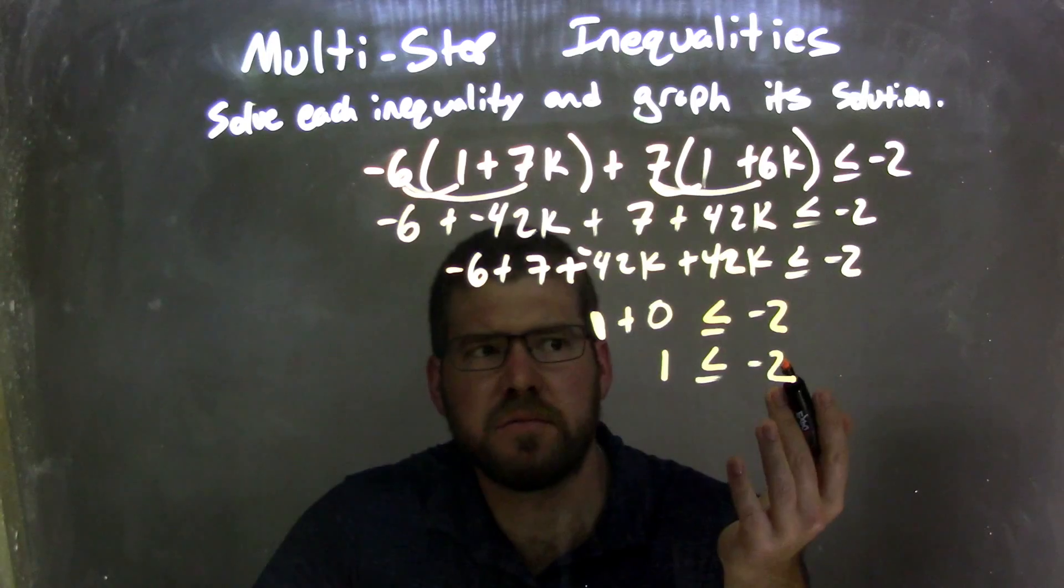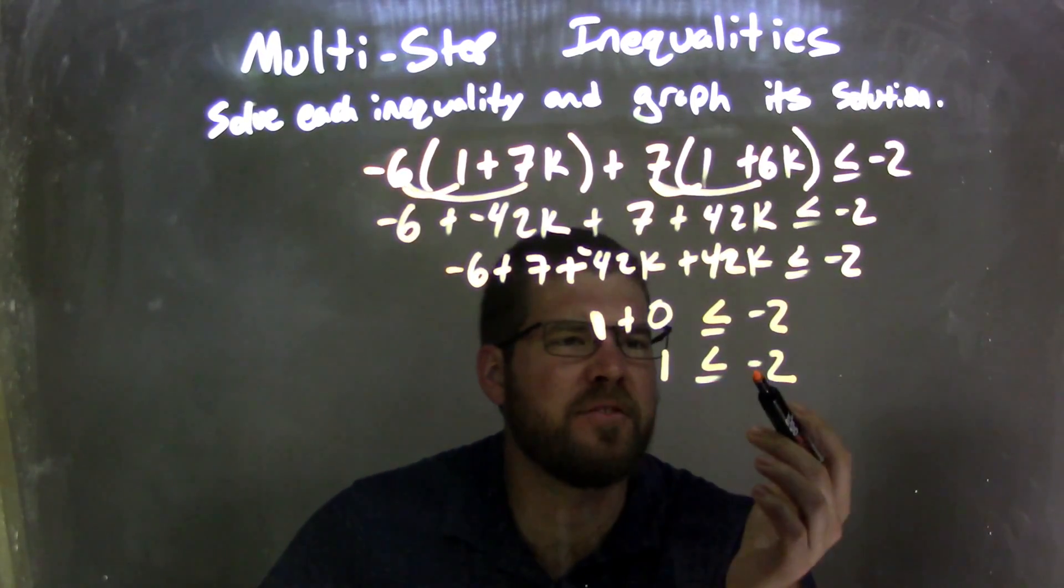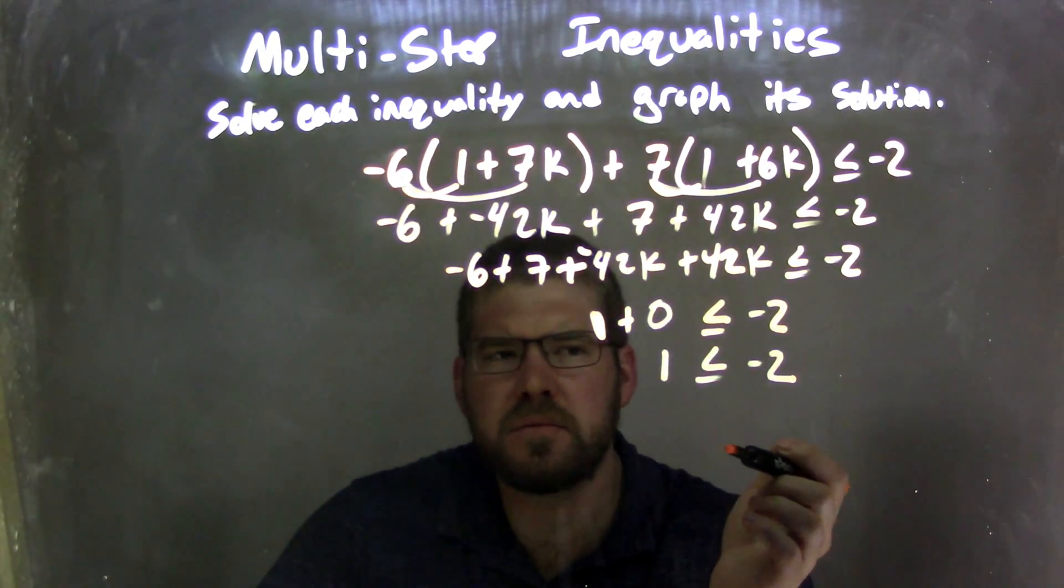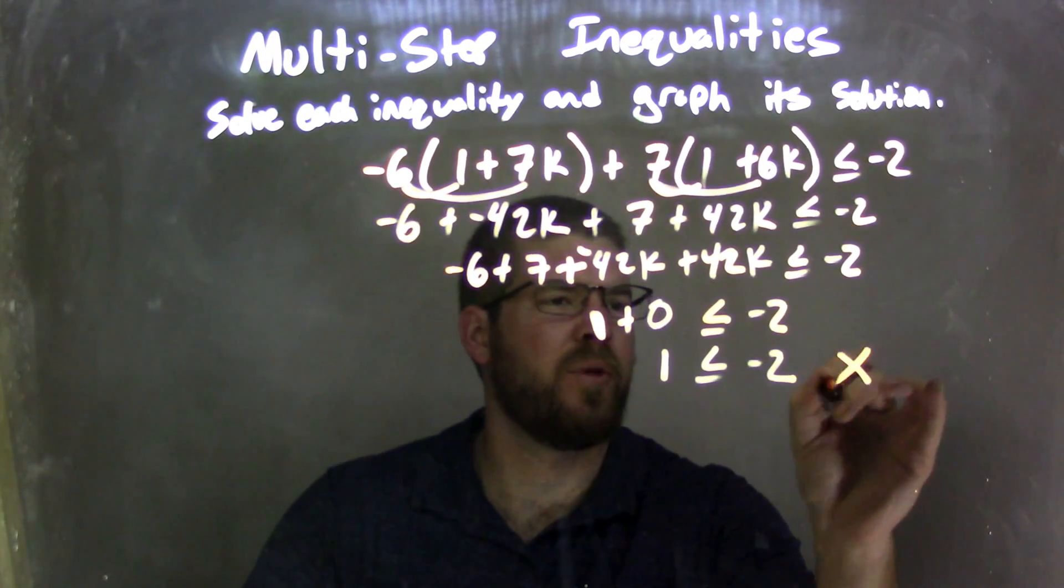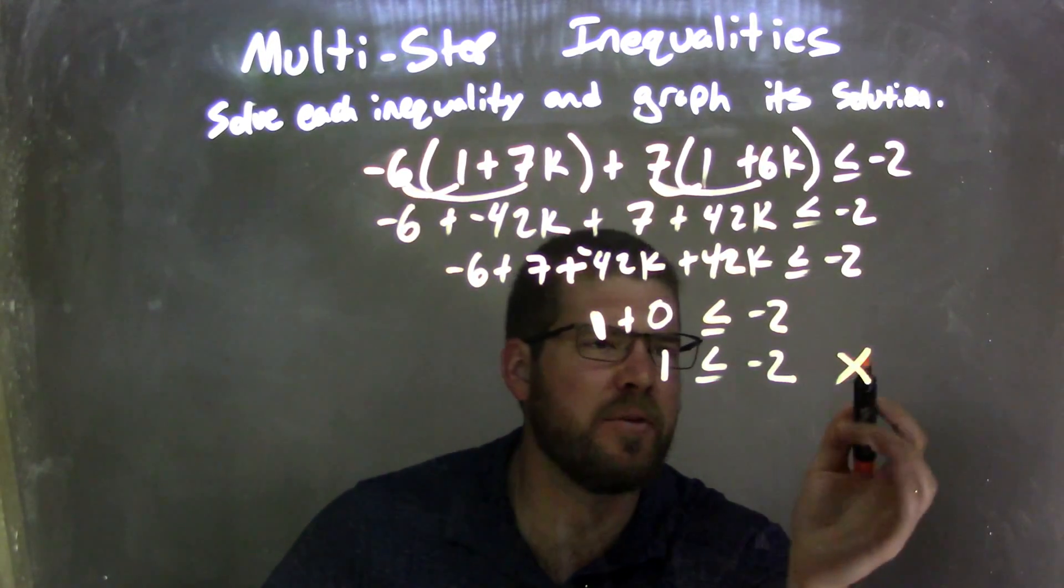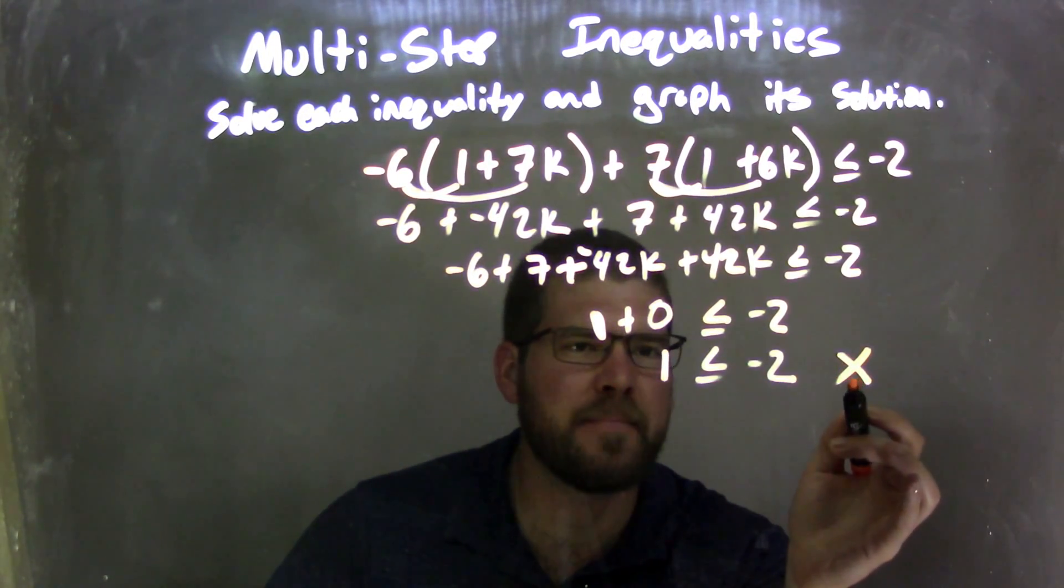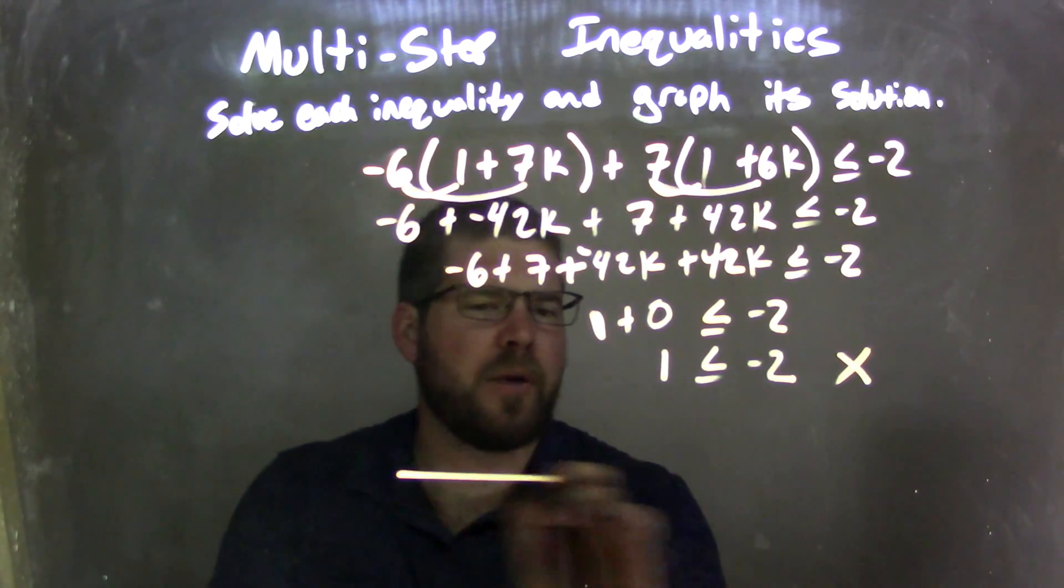All right, my variable is gone. And we have 1 is less than or equal to negative 2. Is that a true statement? No, 1 is not less than or equal to negative 2. That's false. I don't like that. So, how do we graph that?